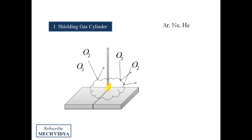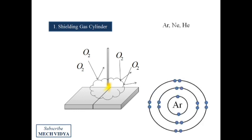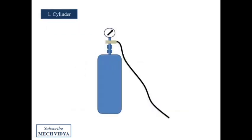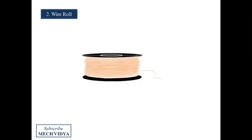We choose noble gases because these gases do not react with metals under any circumstances. This is because they are chemically very stable and the outermost shell is saturated, and thus they do not have any affinity to lose or gain electrons from other metals. So to pump these gases, we have a cylinder.